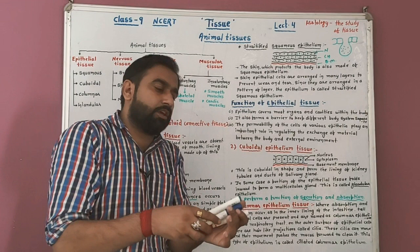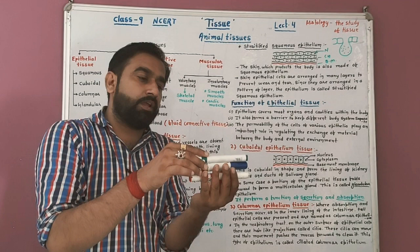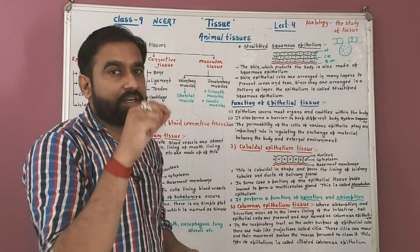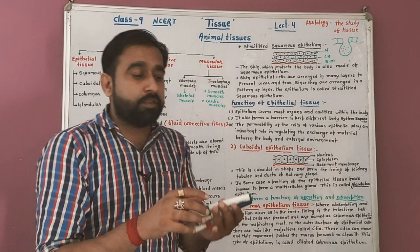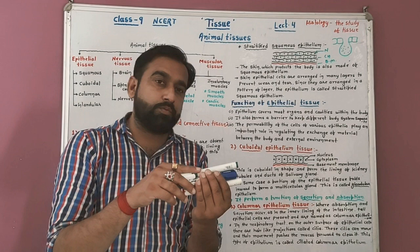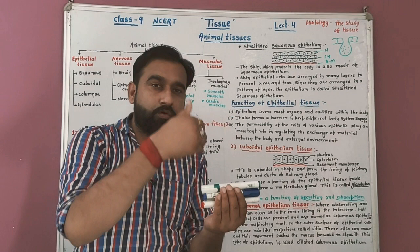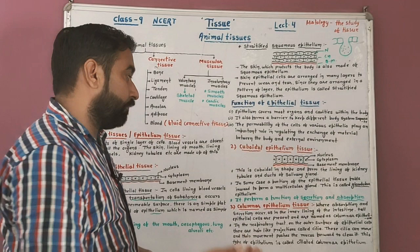If thread-like structures called cilia are present on cuboidal epithelial tissue, it is called ciliated cuboidal epithelial tissue. Similarly, ciliated columnar epithelial tissue exists. Where ciliated cuboidal or ciliated columnar epithelial tissues are found, the main function is absorption and transportation. They also work on moving mucus for cleaning — for example, in blood vessels or the small intestine — this cleaning function is performed by ciliated columnar epithelial tissue.